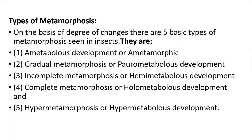There are five types of metamorphosis seen in insects based on the degree of changes. These are: ametabolous development, gradual metamorphosis or paurometabolous development, incomplete metamorphosis or hemimetabolous development, and complete metamorphosis or holometabolous development.